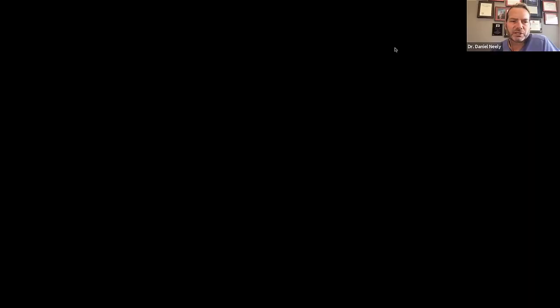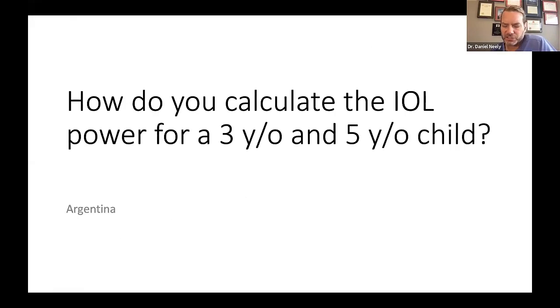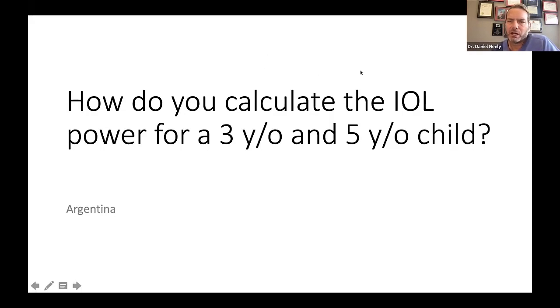This frequently asked question: how do you calculate intraocular lens power for a three-year-old and a five-year-old child? First you have to decide whether you can put an IOL in — with corneas less than 10 mm, PHPV cases, or nanophthalmos you may not be able to. In this age group of three to five, presumably you have an eye that's large enough. Then you have to decide what postoperative refractive error you want. Some people target emmetropia, plano, just like in an adult. That is generally not how I do it.